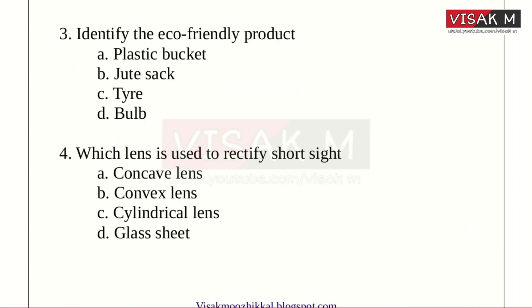Third one: Identify the eco-friendly product. Option A: Plastic bucket. B: Jute sack. C: Tire. D: Bulb. The right answer is jute sack — that is the eco-friendly product.